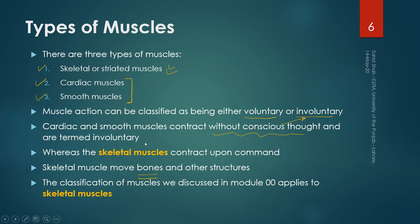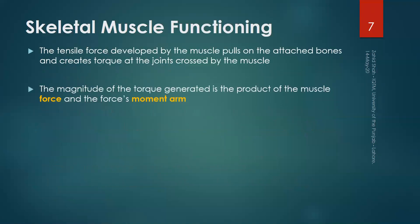We will discuss the structure of skeletal muscles in more detail when we cover physiology. The tensile force developed by a muscle pulls on the attached bones and creates torque at the joints crossed by that muscle. Muscles generate tensile force by nature because of their fibrous structure. It is possible that one joint is crossed by more than one muscle, or one muscle crosses more than one joint.